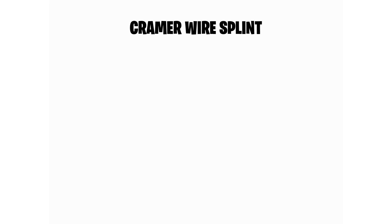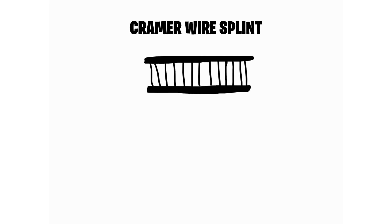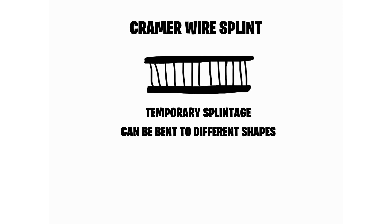First, let's look at the Cramer wire splint. This picture represents the Cramer wire splint — it's a hand-drawn picture. You can see two parallel thick wires with interlacing thin wires in between. This Cramer wire splint is used as a temporary splint. When you find a patient at a road traffic accident site and need to transfer them to the emergency department, you can use this splint, which is readily available to most paramedics. The advantage of the Cramer wire splint is that it is flexible and can be bent to different shapes, so it can be used for different joint or bone fractures.